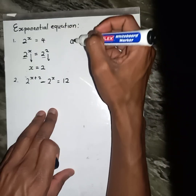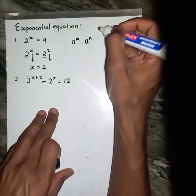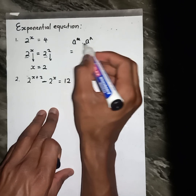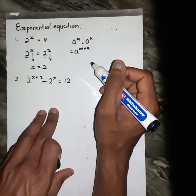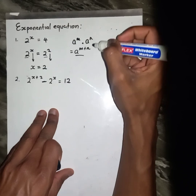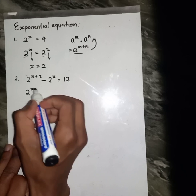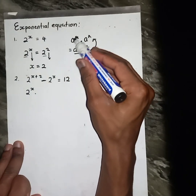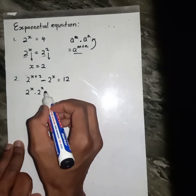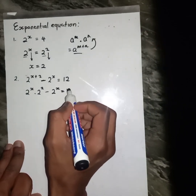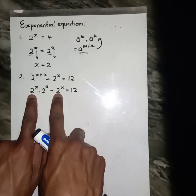You still remember the law of exponents that we dealt with when we were starting with the concept of exponents. We said if you have the same base, you can add those exponents. But here we want to split — it's like we go backward. So I'm going to have 2 to the power x multiplied by 2 to the power 2, going backward. Then we have 2 to the power x equals 12.